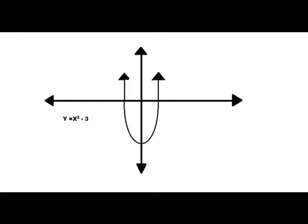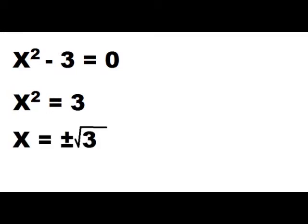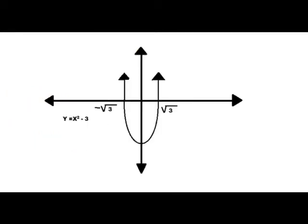Let's start off with our first graph: x squared minus three. We can go ahead and put this three units down because it's minus three, so we know that it's gonna take that behavior. We're gonna want to find the zeros, so we solve for x: x squared minus three equals zero. We find that x equals plus or minus the square root of three. Let's mark that on the graph so we know where our zeros are.